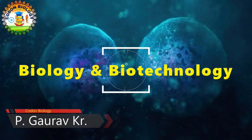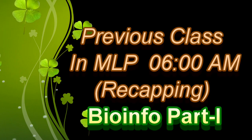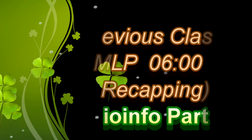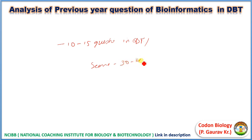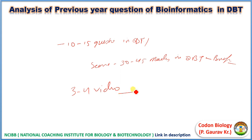After one week of holiday, welcome back to the photo page. Every single year there are 10 to 15 questions. In DBT, you can score 30 to 45 marks in DBT only from bioinformatics. Here in these 3 to 4 video lecture series, I'll try to give you important topics, concepts, and some question-solving tricks in bioinformatics.